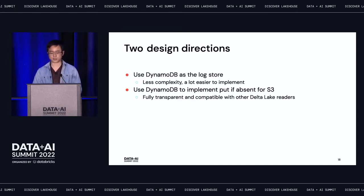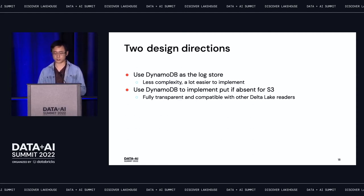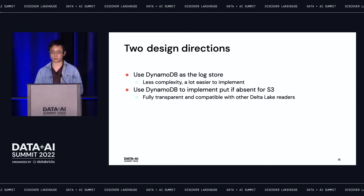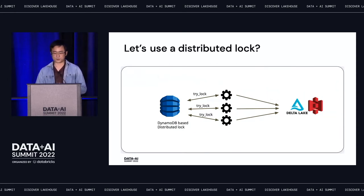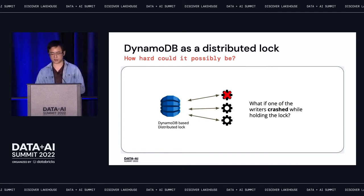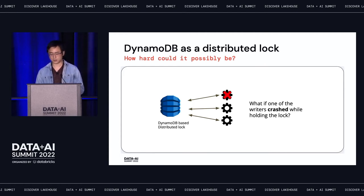So we ended up going with the second approach: leverage DynamoDB to implement the put-if-absent semantic on top of S3. The benefit of this design is it's fully transparent and compatible with any open-source or closed-source Delta Lake reader, as long as they all read the commit log and data files from the same S3 bucket. The first obvious idea is to use DynamoDB as a distributed lock, guaranteeing that only a single writer can enter the critical region to add a commit.